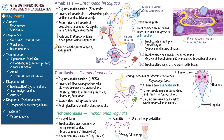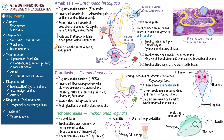Let's draw a simplified Trichomonas vaginalis to show some of its distinguishing features. First, draw an oblong shape with a nucleus. Indicate the axostyle, which runs the length of the body and extends posteriorly, four anterior flagella, and the undulating membrane, which is a modified fifth flagellum. This concludes our diagram.